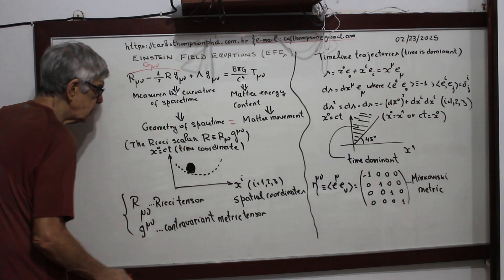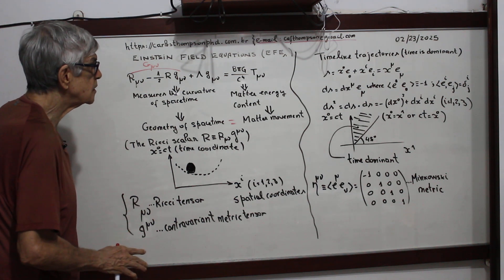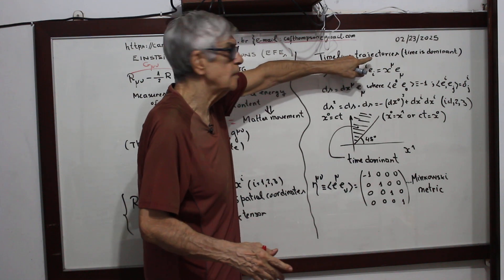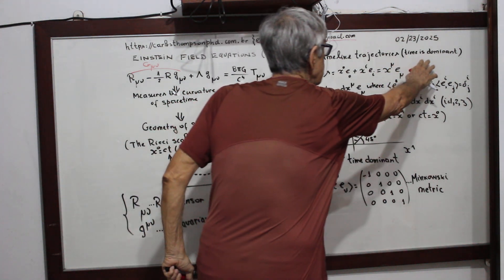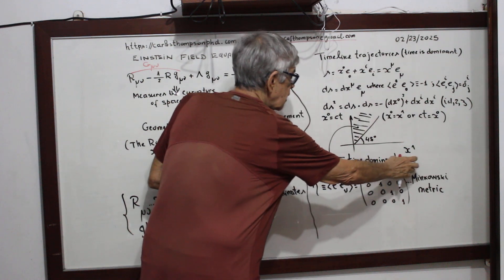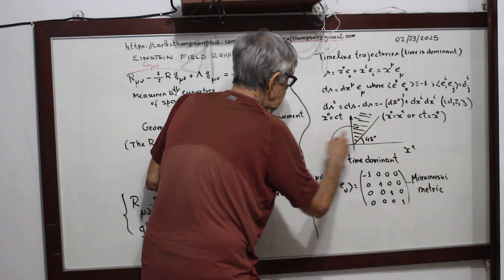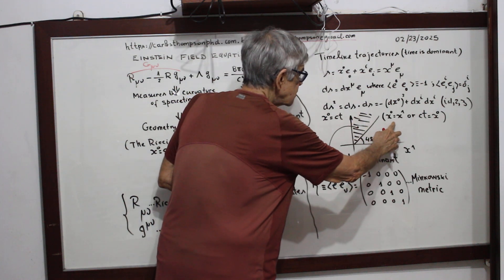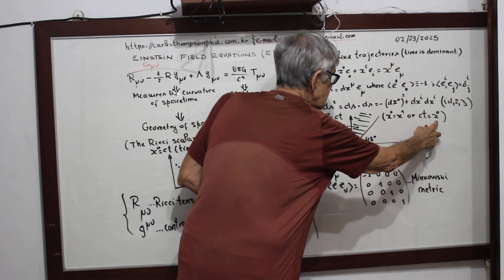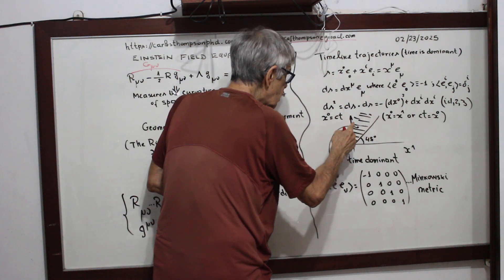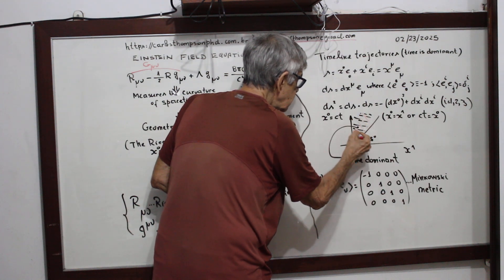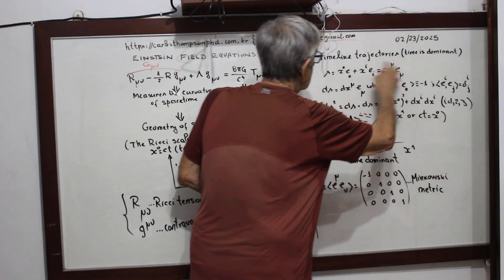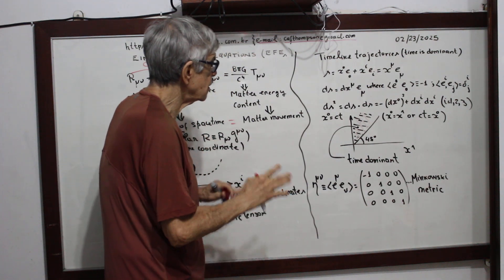There is matter, there is curvature. Now we are going to work in the time-like trajectory hypothesis — where time is dominant. Focus on the X-one spatial coordinate and the time axis. This is the 45-degree line where X-zero equals X-one, or CT equals X-one. We are going to work in the region where time is dominant, and that's why we call it the time-like trajectory.